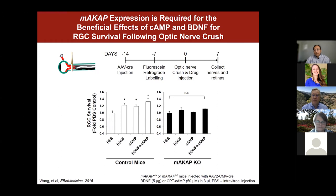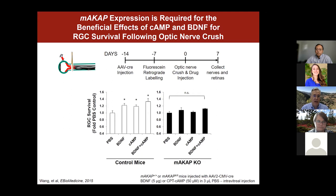In the optic nerve crush model — which has particular relevance to drusen — we crush the optic nerve. About three to seven days later, you see death of retinal ganglion cells and permanent loss of function within one to two weeks. We injected mice with adeno-associated virus expressing a Cre recombinase to induce cell-type specific knockout, crushed the optic nerve two weeks later, and then collected the retina at seven days post-crush to examine RGC survival.